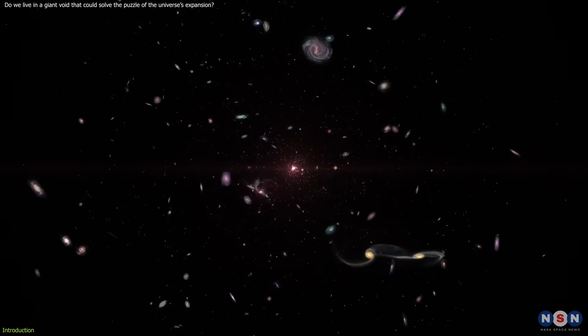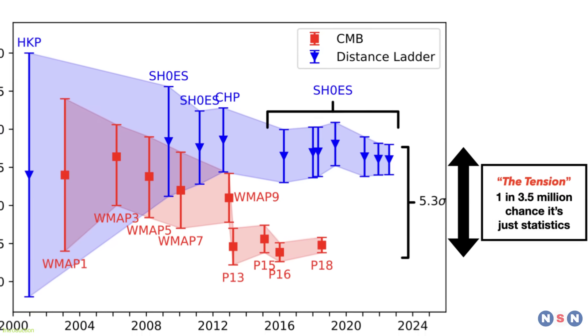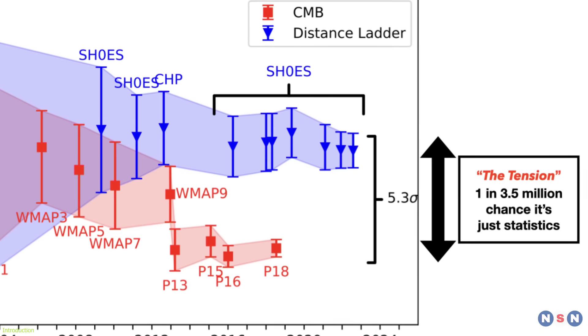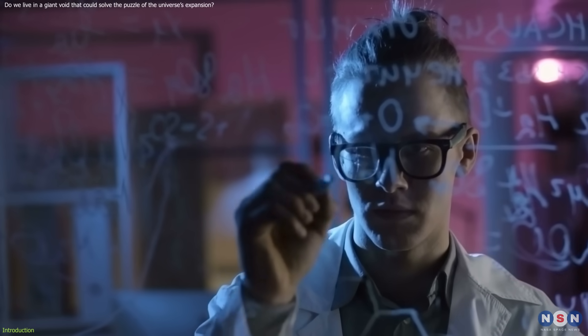And as mentioned previously, there is a problem. Different methods of measuring the expansion rate give different results. This is called the Hubble Tension, and it is one of the biggest mysteries in modern physics.